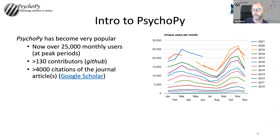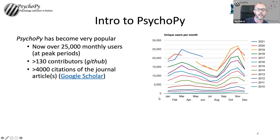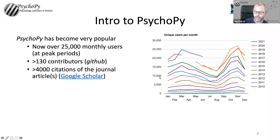Over that period, PsychoPy has become popular. Back in the noughties and tens, we had hundreds — maybe a couple of thousand active monthly users. We're now up to around 25,000 active monthly users. You get to see people go on holiday; students go on holiday and researchers stay working. Some people do a bit less over Christmas, although if you look at our logs, on Christmas Day and Boxing Day there will still be some people running experiments. We've got hundreds of contributors and thousands of citations. It's become popular.